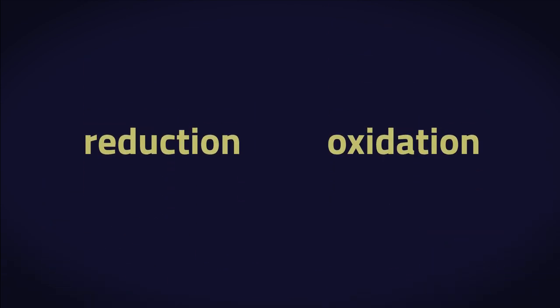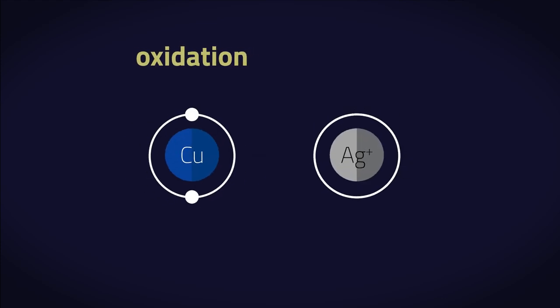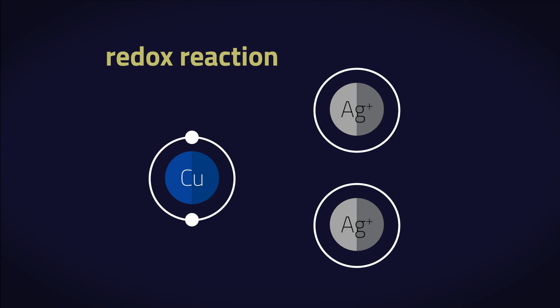Remember that oxidation means the loss of electrons and reduction means the gain of electrons. So for a redox reaction, electron transfer has to happen with one substance losing electrons and another substance gaining electrons.